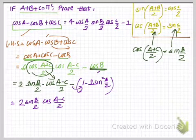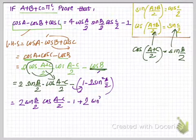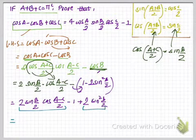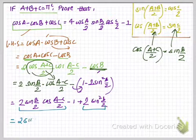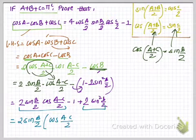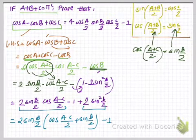Distributing the negative sign gives 2 sin(B/2) · cos((A−C)/2) − 1 + 2sin²(B/2). Taking 2 sin(B/2) as a common factor from the first two terms: 2 sin(B/2) · [cos((A−C)/2) + sin(B/2)] − 1.